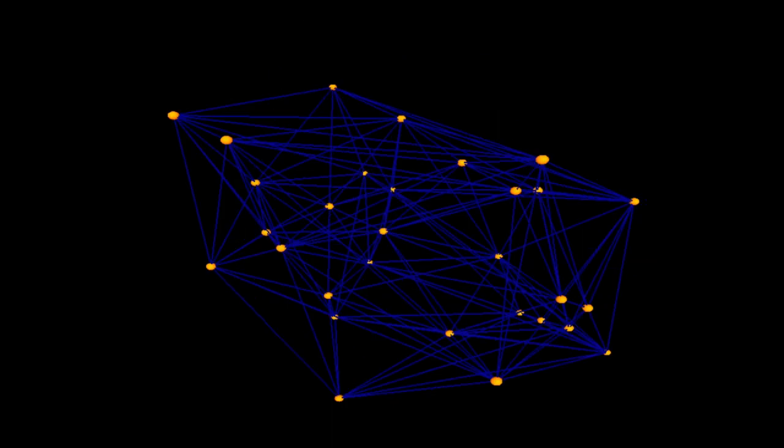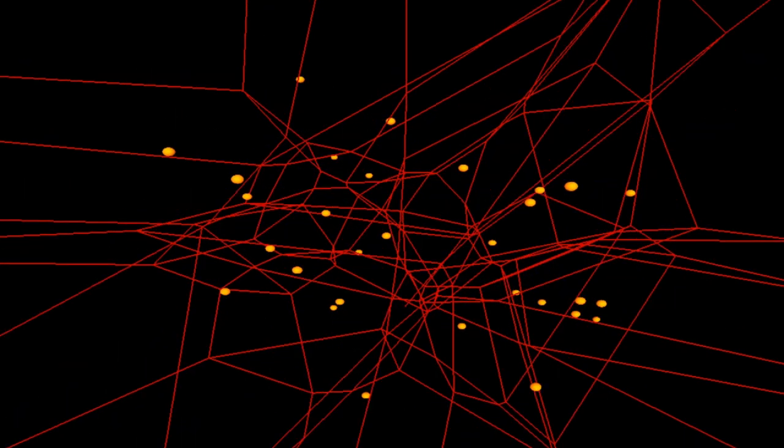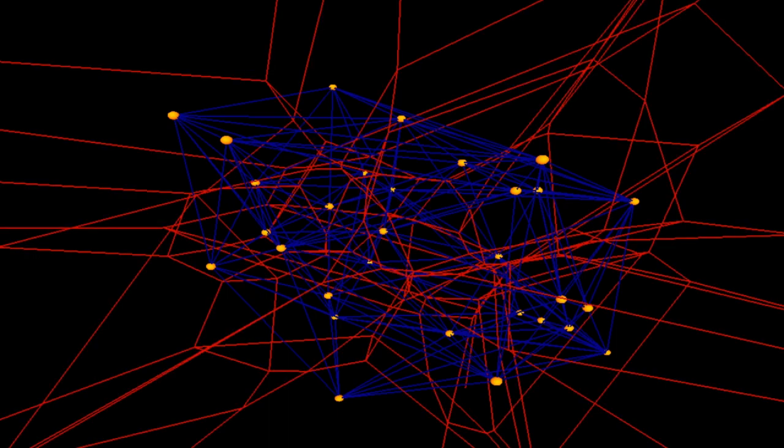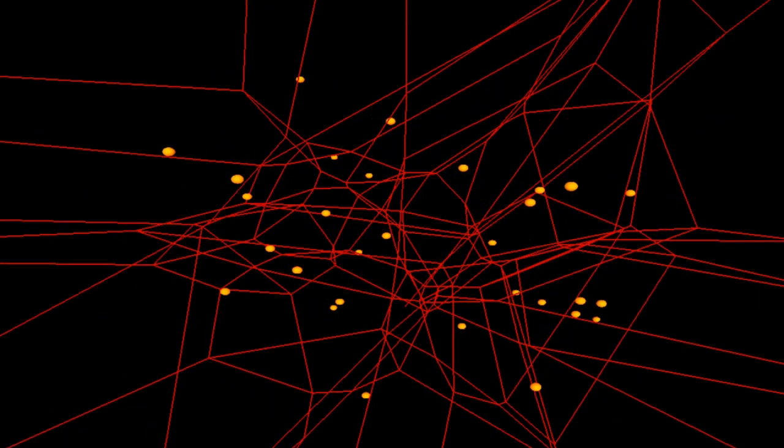As it's the case in two dimensions, in three dimensions, the Voronoi diagram and the Delaunay triangulation are dual to each other. They represent the same thing, but from a different point of view. You can see here both the Voronoi diagram and the Delaunay triangulation for our small set of about 30 points.